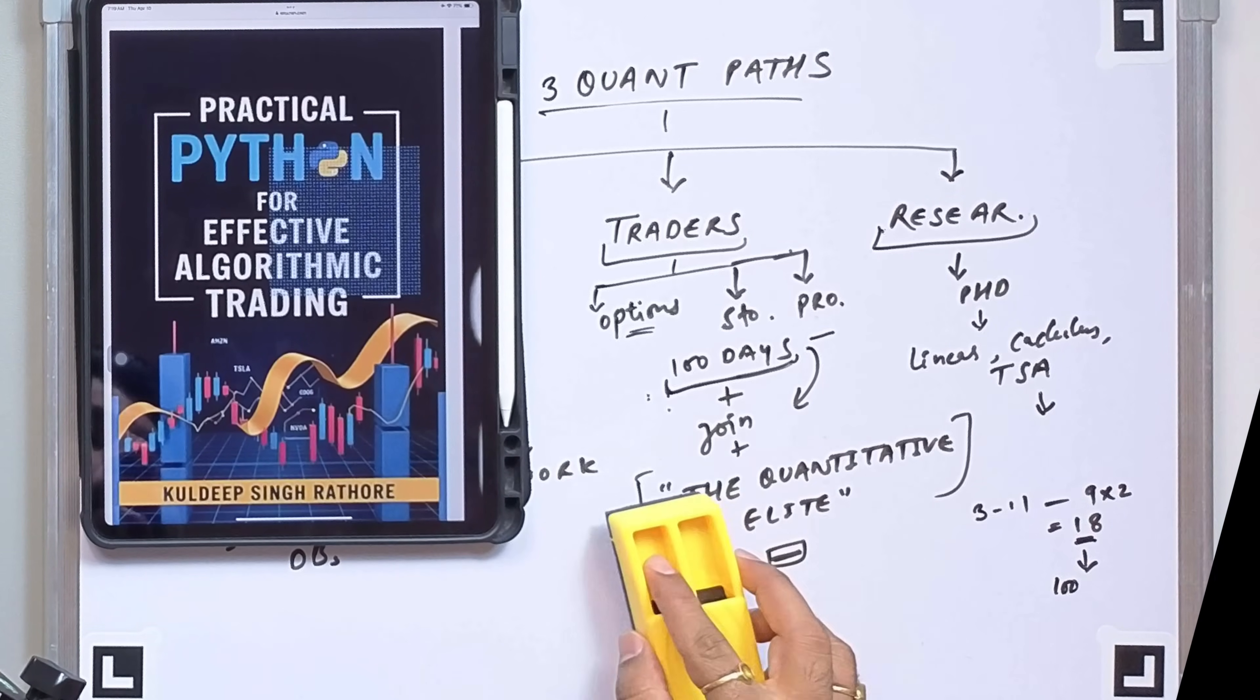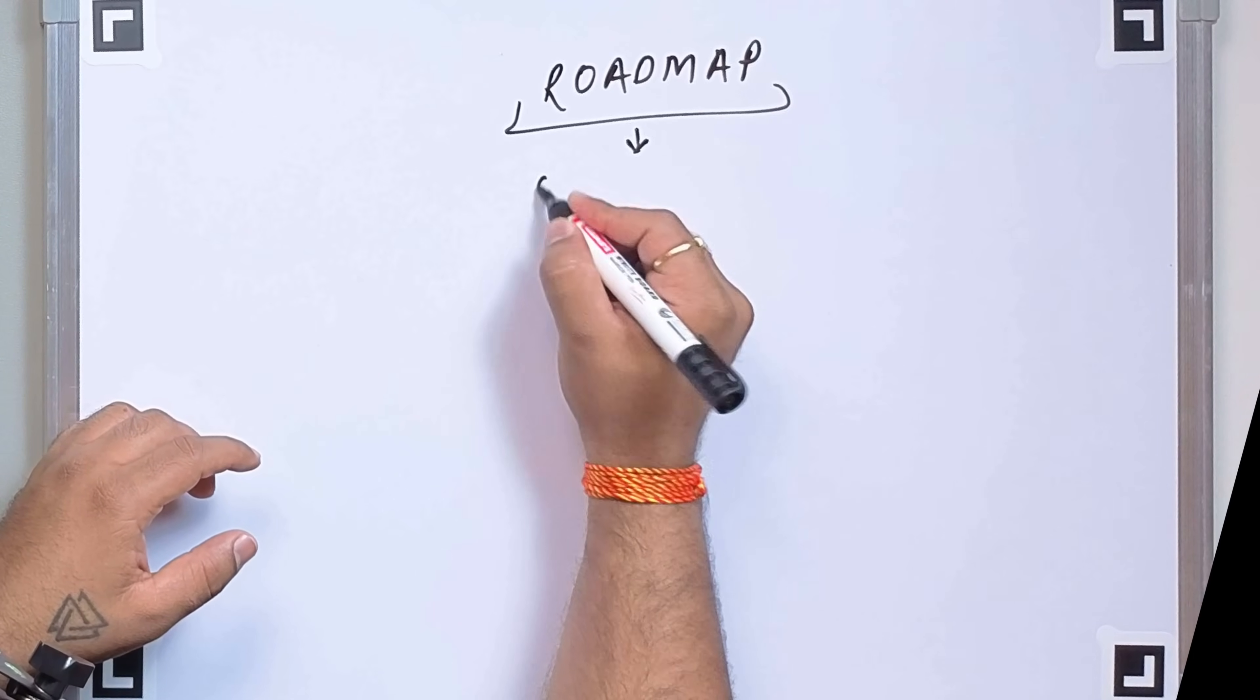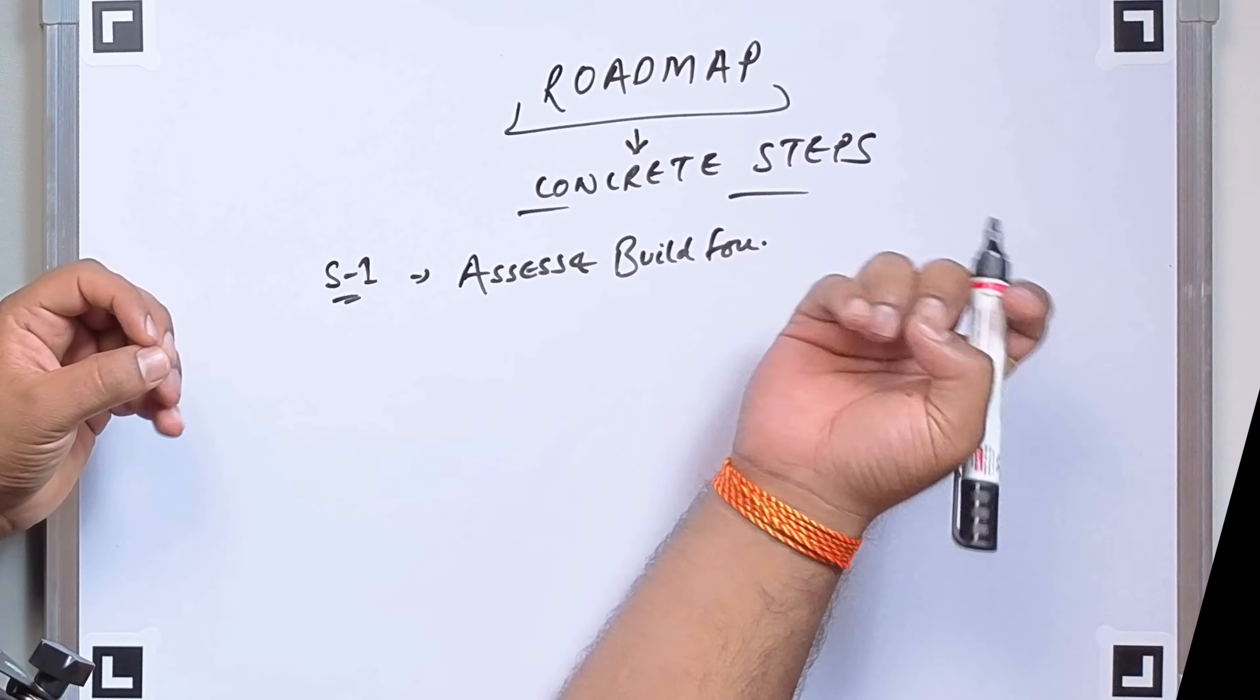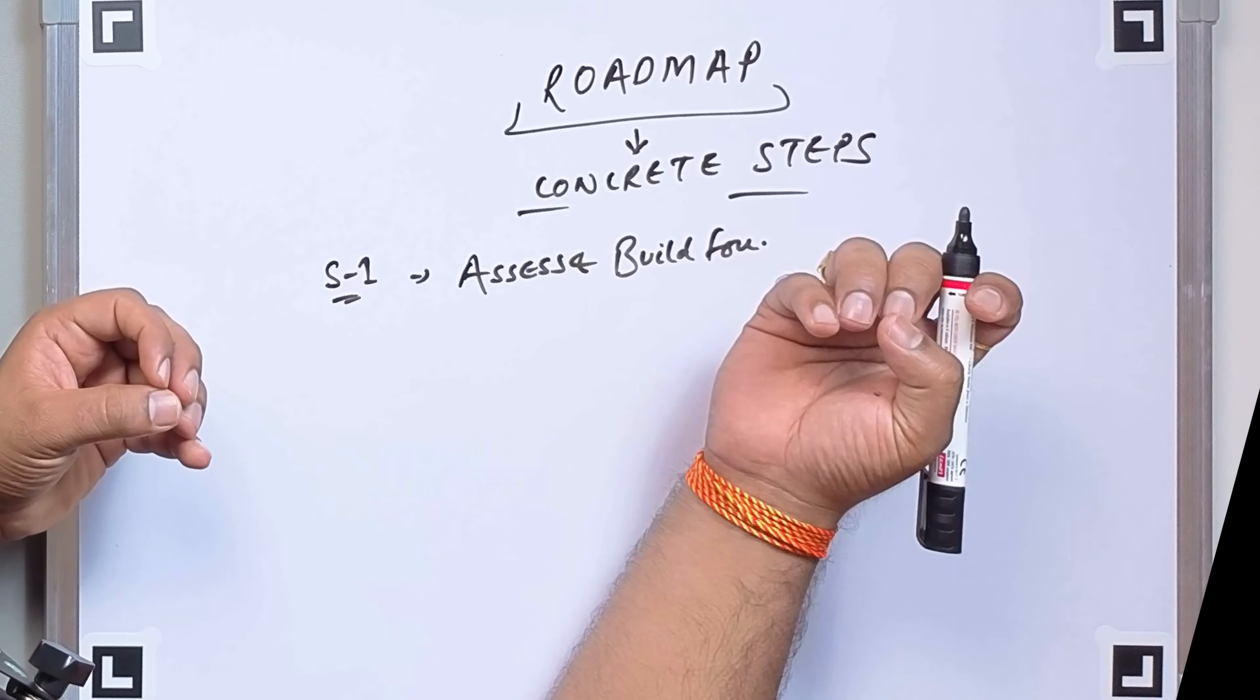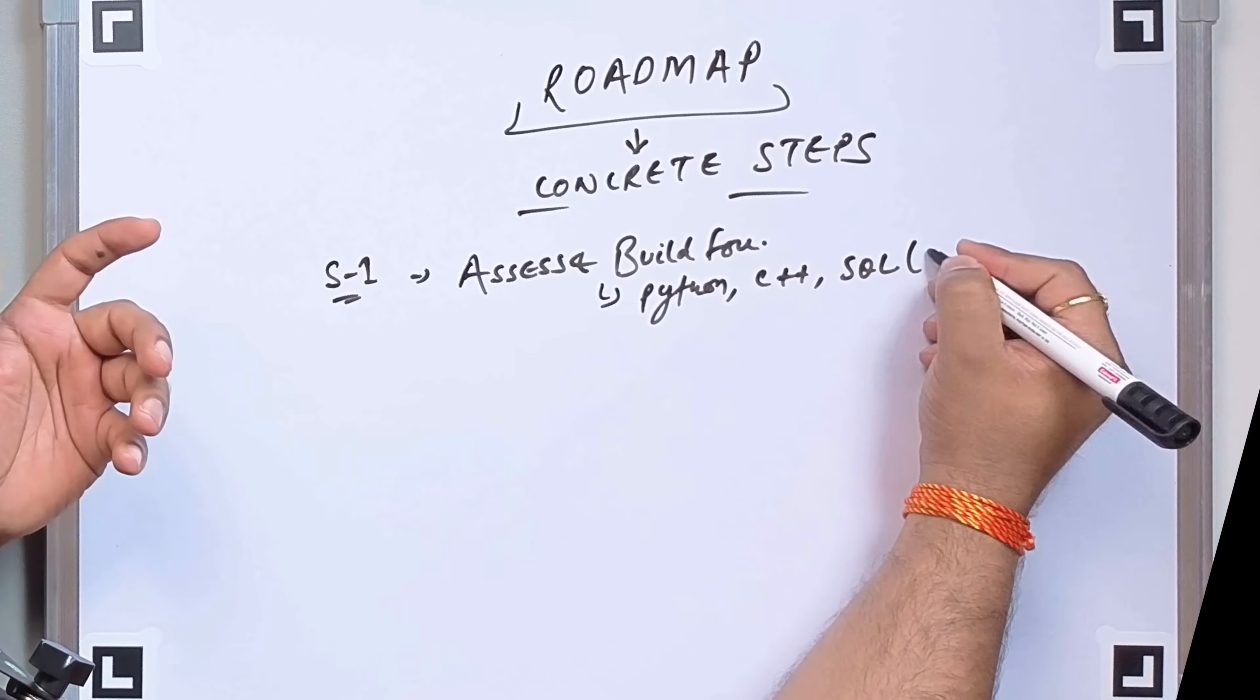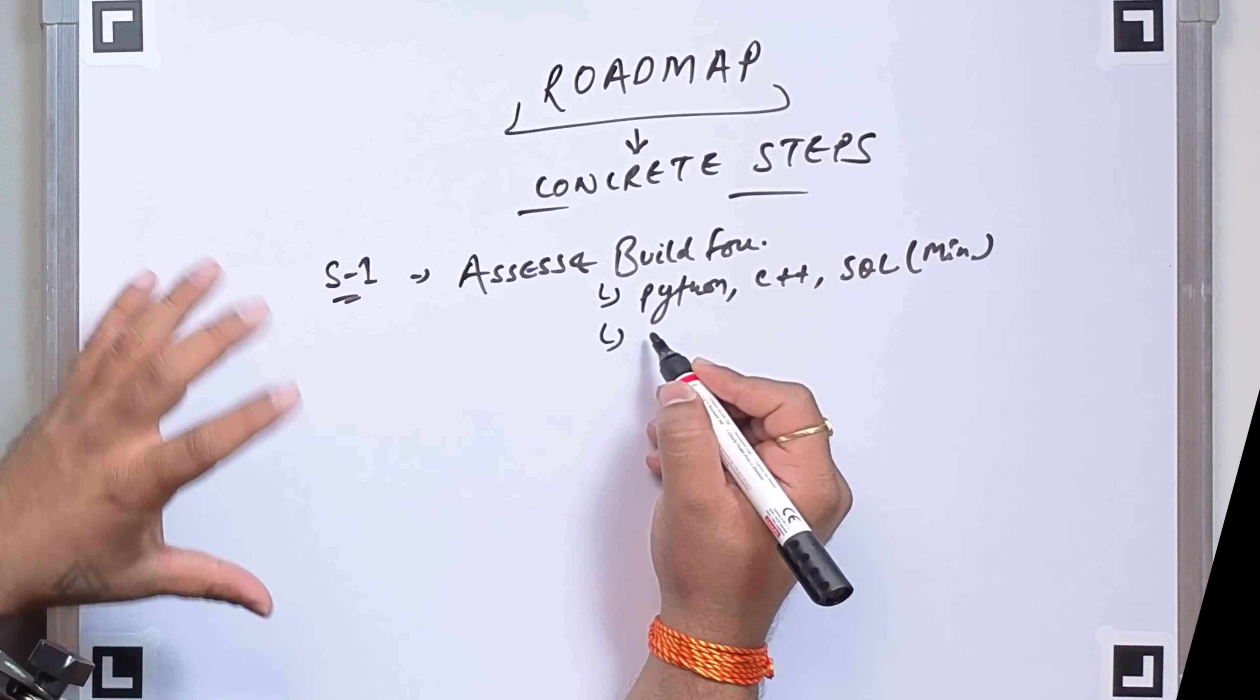Now let me quickly give you the concrete steps, the roadmap. Step one: Assess and build your foundation. In this, what you can do is identify which quant path aligns with your strengths and passions. You have to audit your mathematical knowledge and fill gaps systematically. Then also you have to develop your programming proficiency. You can start with Python, which I have explained very well. And soon we are going to start with C++ and SQL. Also you can just have a basic minimum knowledge of SQL, but you should have it. Then you have to build the financial market understanding through both theory and practice. So for this also you can join our community. We'll be discussing almost every day.